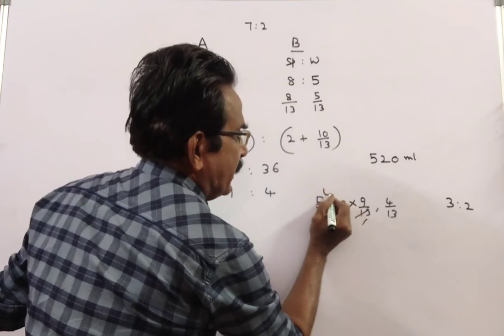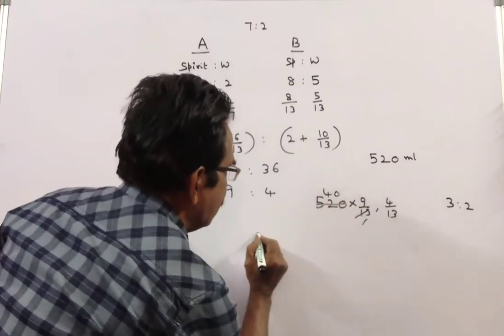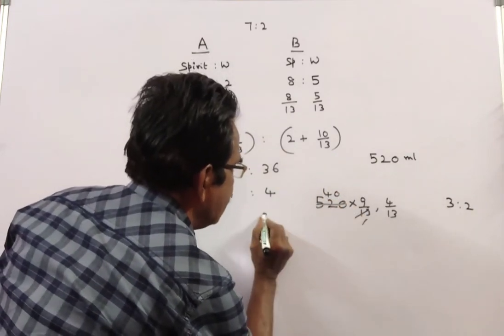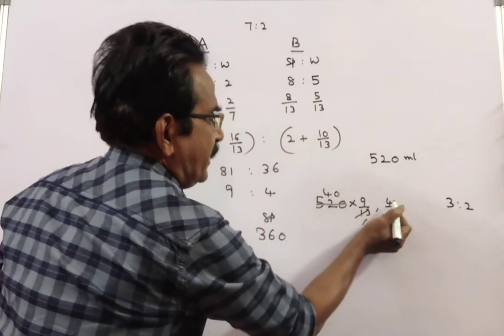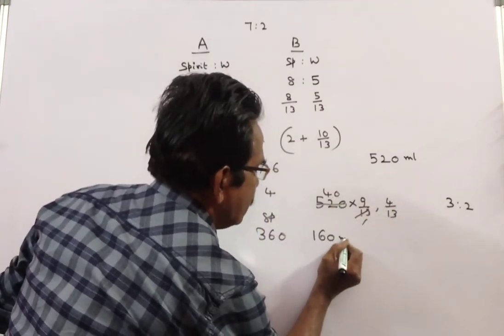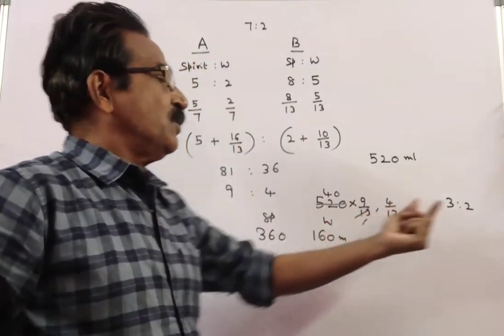13 fours, 13 forties, 14 nines. 360 ml spirit, 40 fours, 160 ml water.